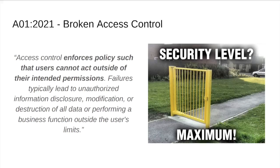The first item on the 2021 OWASP Top 10 list is broken access control. OWASP describes this as: access control enforces a policy such that users cannot act outside their intended permissions. Broken access control is when there's a failure to enforce that, which can lead to information disclosure, modification or destruction of data, or other unintended events.